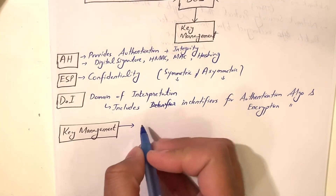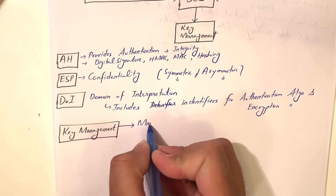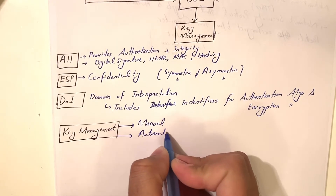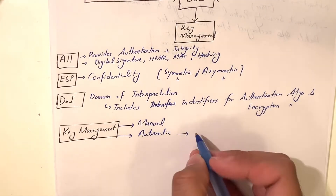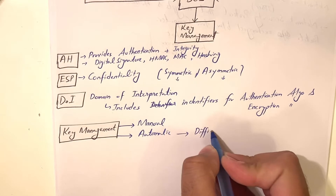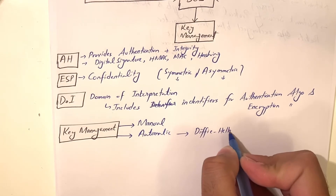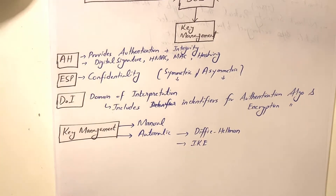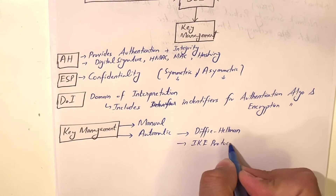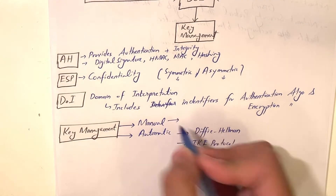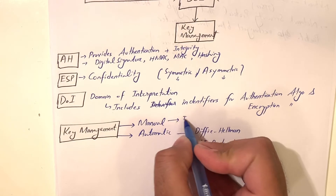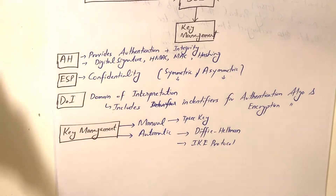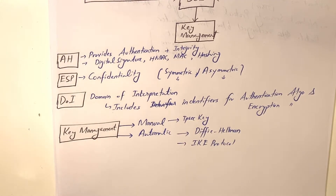For key management, it can be implemented manually or automatically. For automatic distribution, people can use Diffie-Hellman or IKE — Internet Key Exchange schemes, which are basically key wrapping schemes. Manual typically uses IPsec keys distributed manually, while automatic involves automatic key distribution algorithms.